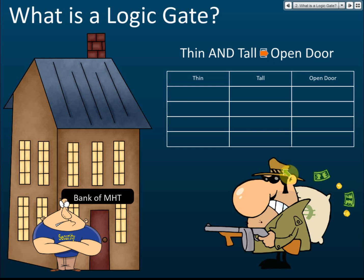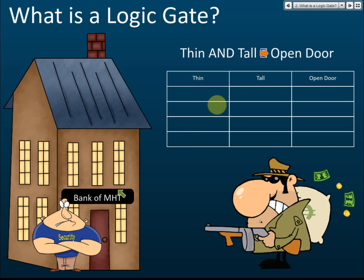The bank employed a security guard, and the manager needs to give instructions: who to open the door for and who not to. The manager told the security guard: open the door for customers who are thin and tall, because the robber is fat and short. So you open the door when the customer is thin and tall.